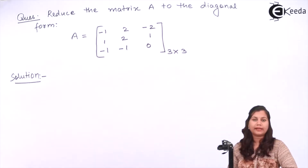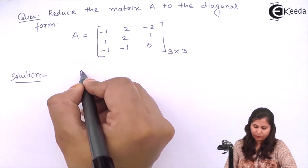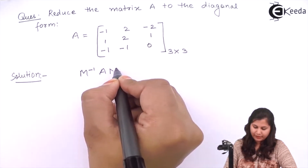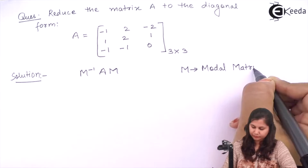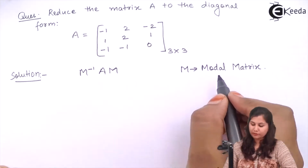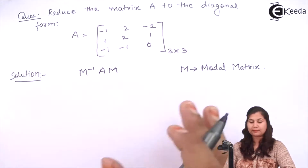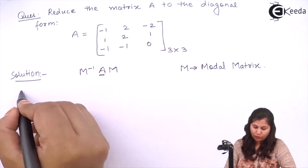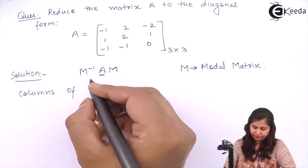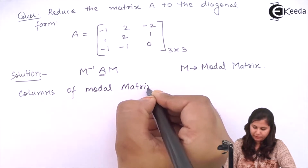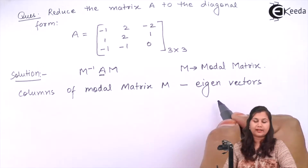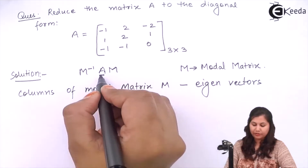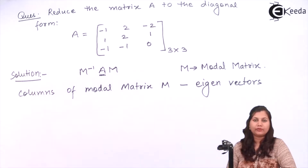When we want to convert an n×n matrix to the diagonal form, we have to multiply it with a modal matrix. We have to find M inverse A M, where M is the modal matrix. This modal matrix is formed by columns which are the eigenvectors of matrix A. So our aim is to find out the eigenvalues of this matrix A.